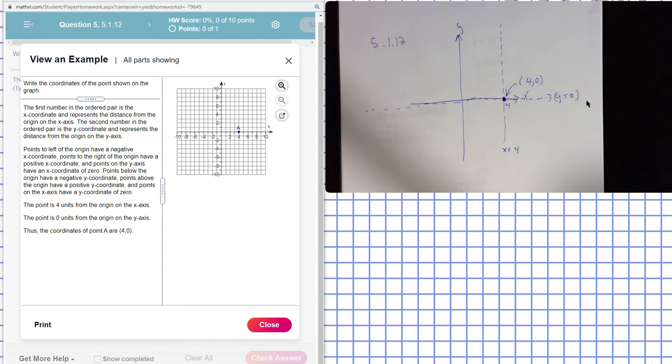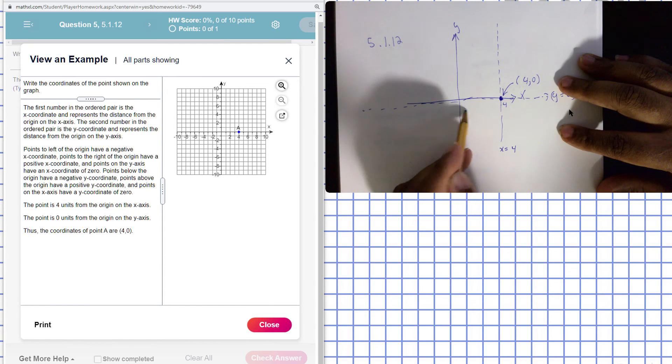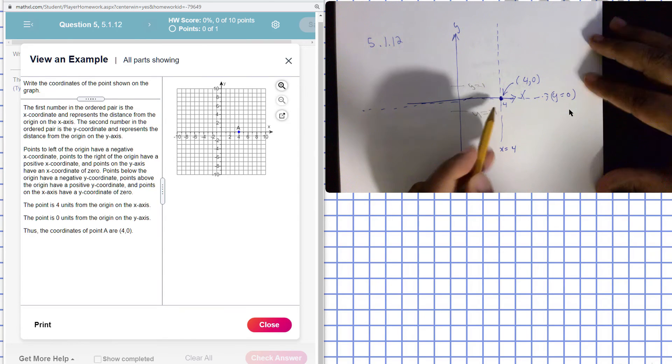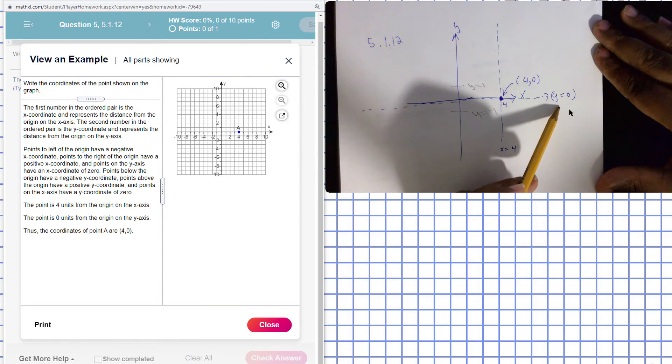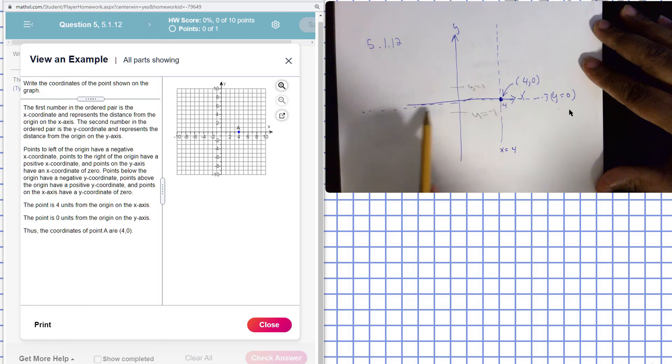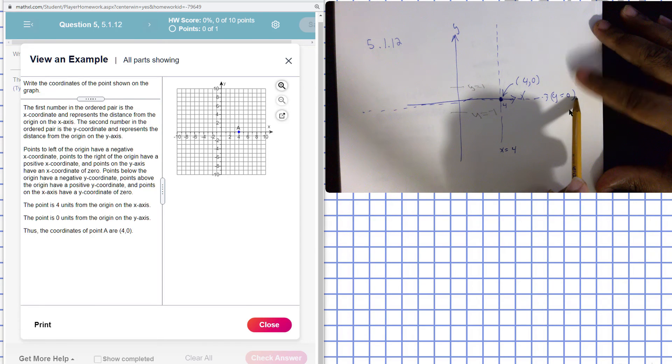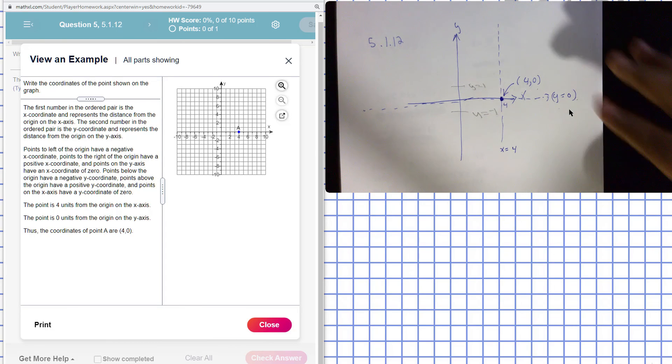Another way of looking at it is that if this is the line y equals one, and this is the line y equals negative one, then this is the line y equals zero here. So our y-coordinate is going to be zero. That gives us our point.